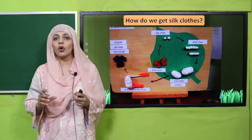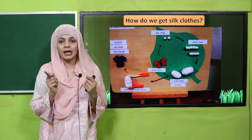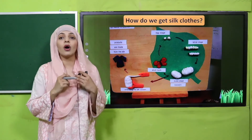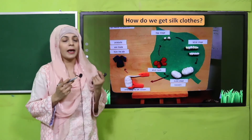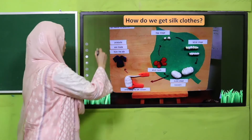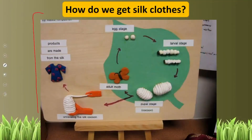So jo silk ke kapde hote hain woh ham kaise banate hain? So let's have a look. Ye ek model hai jo maine banaya tha, toh aap dekhein — sabse pehle jo hai woh egg stage hoti hai.